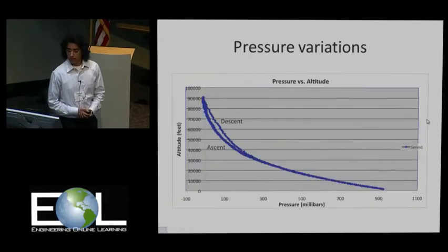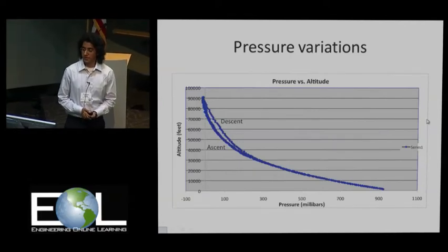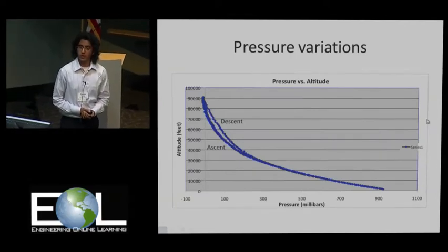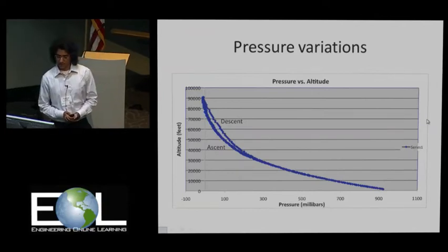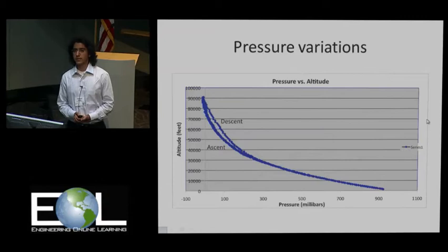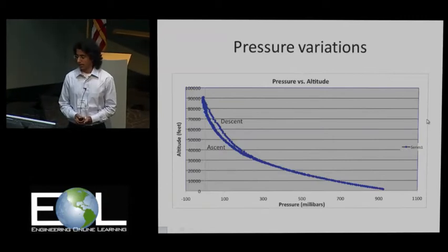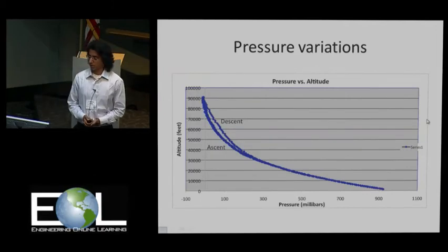The pressure variations had a general trend: pressure decreased with an increase in altitude, which is reasonable as gravity has a much lesser effect on air molecules at higher altitudes. We did have some negative values of pressure, which could be due to incorrect calibration of the instruments, but otherwise the general trend was very normal.